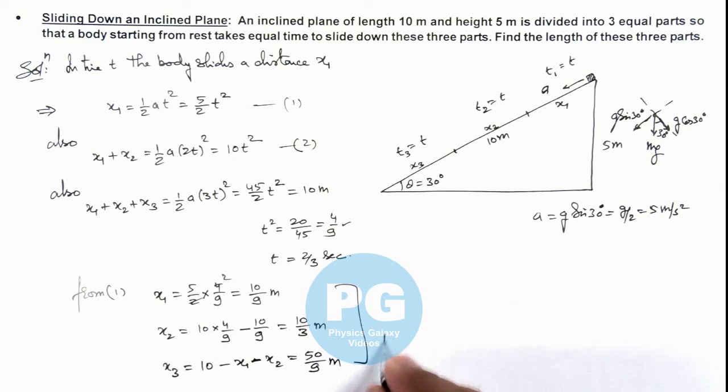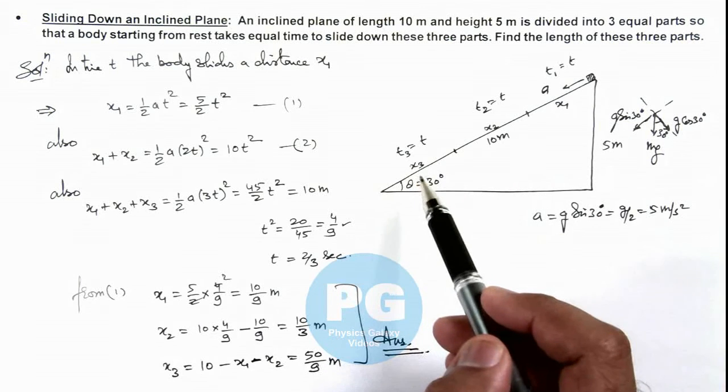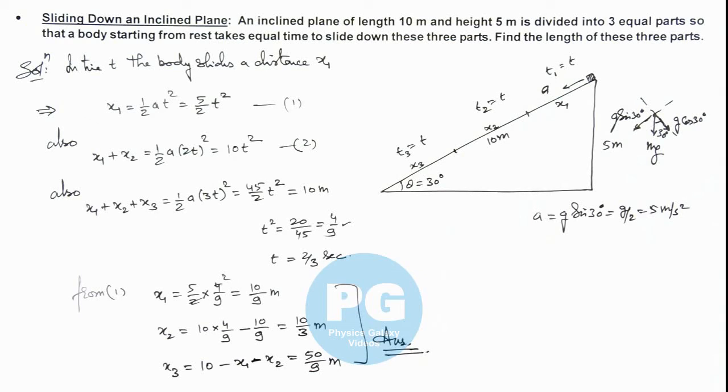So these are the final results of this problem, the lengths in which the inclined plane is to be divided so that in equal intervals the body will travel these distances.